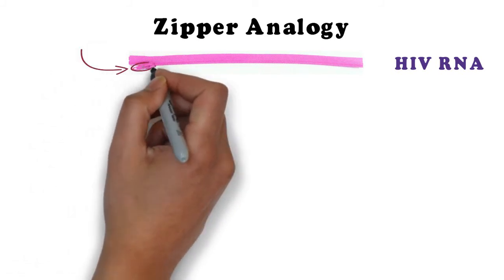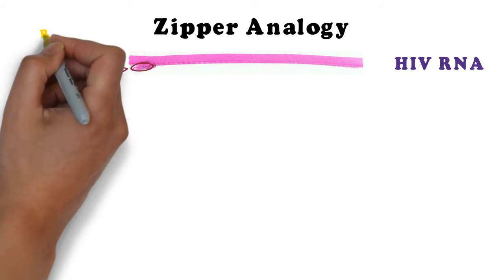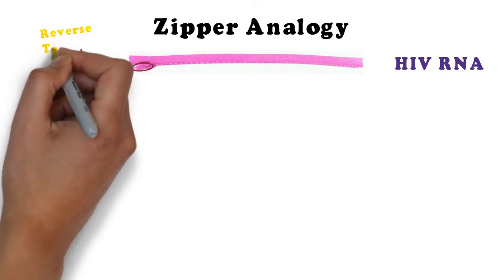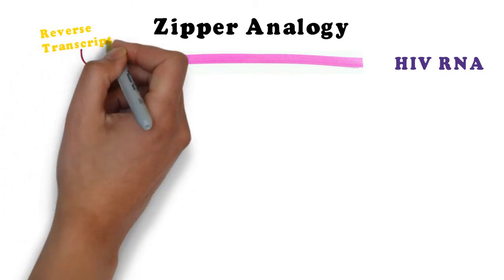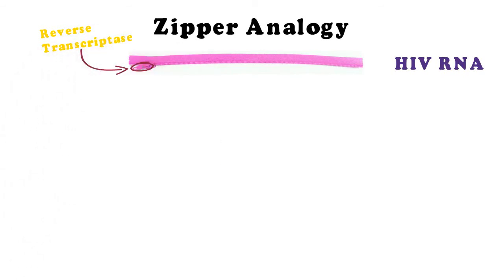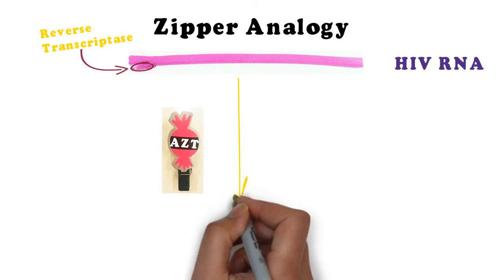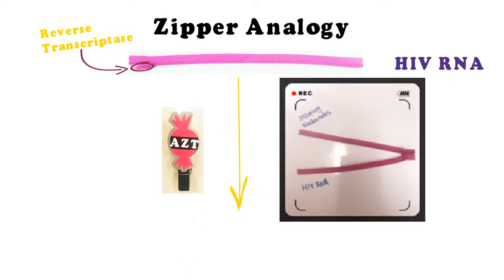Now, let's go back to our zipper analogy. Once again, the zipper is our RNA strand and our zipper pull is the reverse transcriptase. However, this time we'll incorporate the AZT molecule. As you can see, the zipper closes properly until the AZT gets added, which prevents us from zipping it all the way.